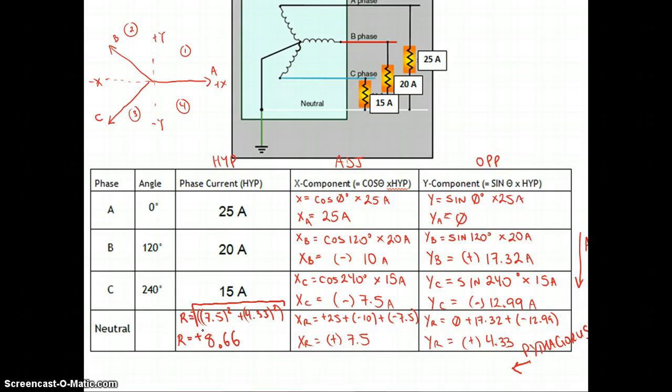Okay, so now we've got our neutral current. If we have 25 amps on A, 20 amps on B, 15 amps on C, we end up with a neutral current of 8.66 amps. Now, if we were to draw this triangle now, we have all the components there for that neutral current. This 7.5 ends up being the adjacent, the 4.33 ends up being the opposite, and the 8.66 for our neutral current ends up being the hypotenuse.